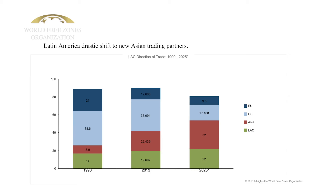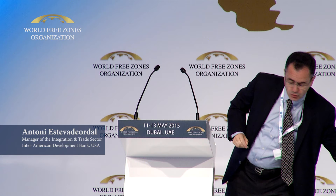This change in patterns of trade creates a completely different situation for regions. For Latin America, one of its most important partners today is Asia. Asia represented less than 10% of Latin American trade in the 1990s. Today it's more than 20%, and it's projected to be more than 30% by 2025. The US is becoming less and less important for Latin America — it used to be the first partner, today it is the second, and will probably be third or even fourth by 2025. Europe is also becoming a lower partner.